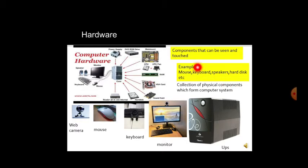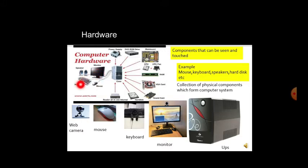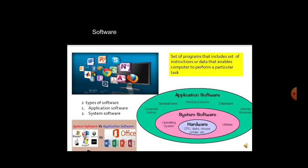Components that can be seen and touched are computer hardware — for example, mouse, keyboard, speakers, hard disk, etc. Hardware is a collection of physical components which form a computer system. You can touch and see a monitor, keyboard, mouse, speaker, ROM, CPU, and hard disk. Examples include webcam, mouse, keyboard, monitor, and UPS.